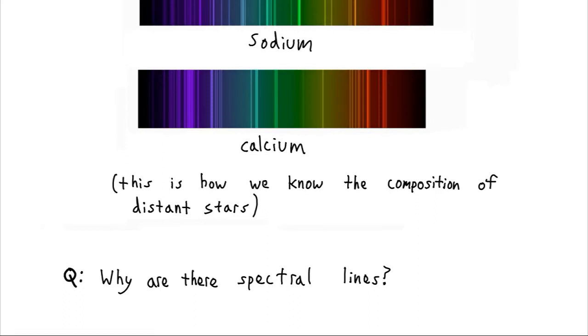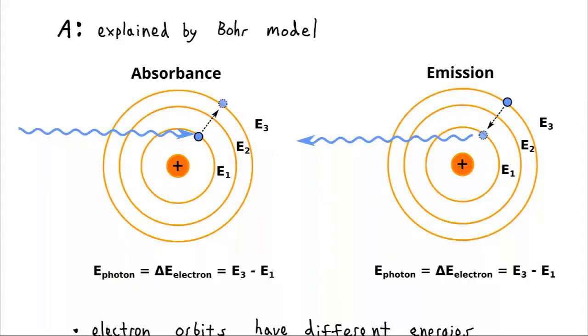But, as useful as this is, why are there spectral lines? Why do we get these unique bands for all the different elements? The Bohr model finally gives a perspective answer to the standing question about where these spectral lines come from. Now, according to Bohr's model, you have a photon,